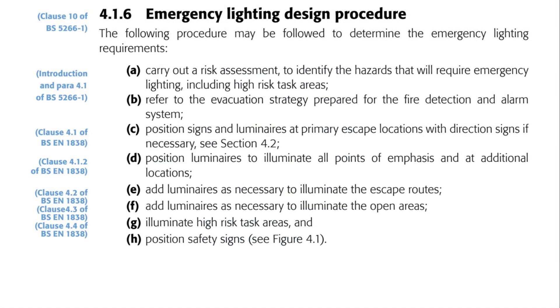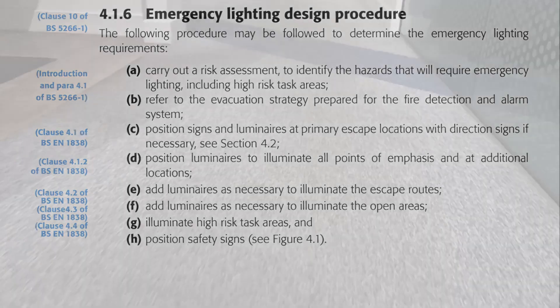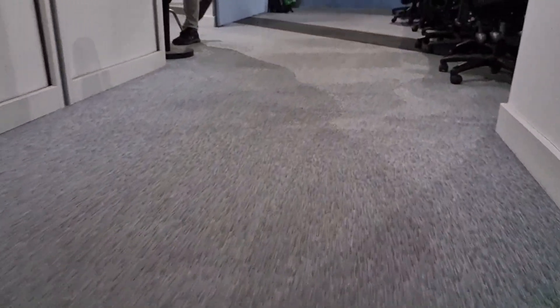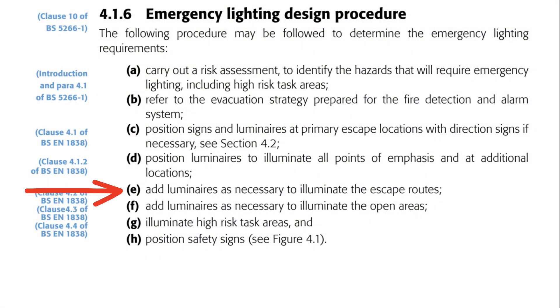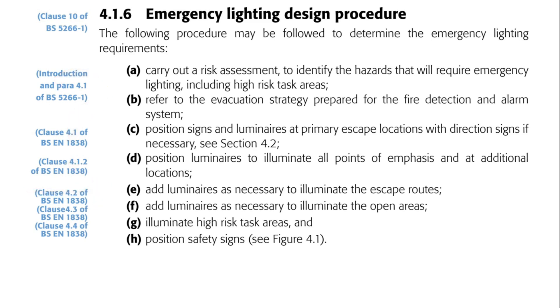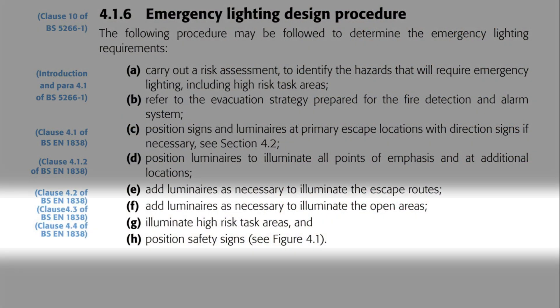Speaking of escape routes, that brings us back to the design procedure. Escape route lighting is critically important, but we only add it after the other elements because once those are placed, we may have already achieved the required lighting levels for the escape routes. If not, we add emergency fittings to bring it up to the right level. Following the same principle, we then add open area emergency lighting, high risk task area lighting, and position any safety signs.